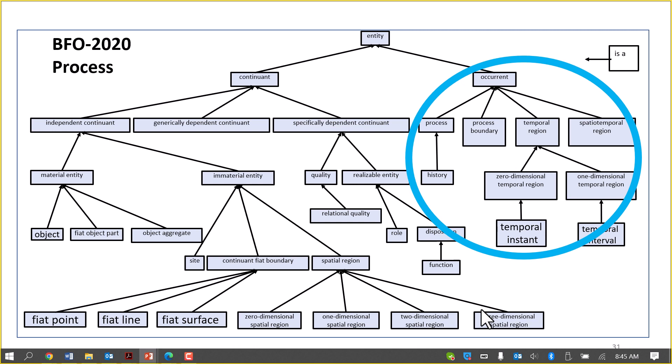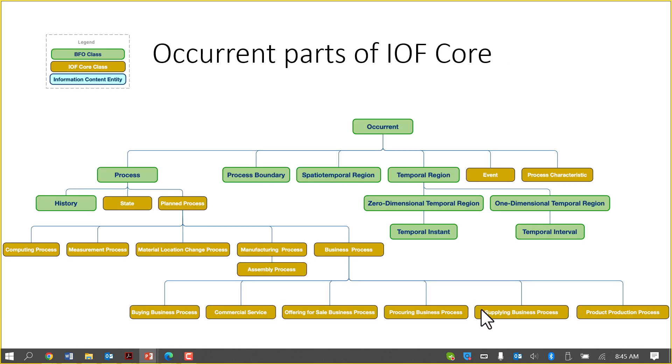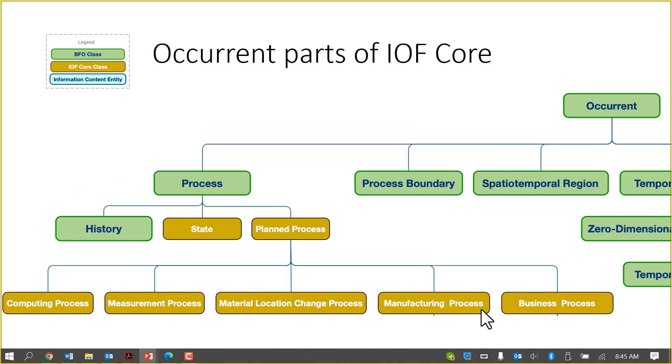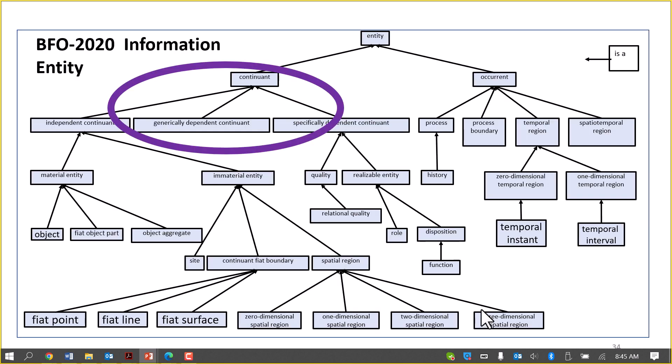Moving to process terms: these are the process-relevant terms in BFO, and these are the current parts of the IOF core. We have planned process, computing process, measurement process, manufacturing process, assembly process, and so on — you can see them there in a slightly larger font.